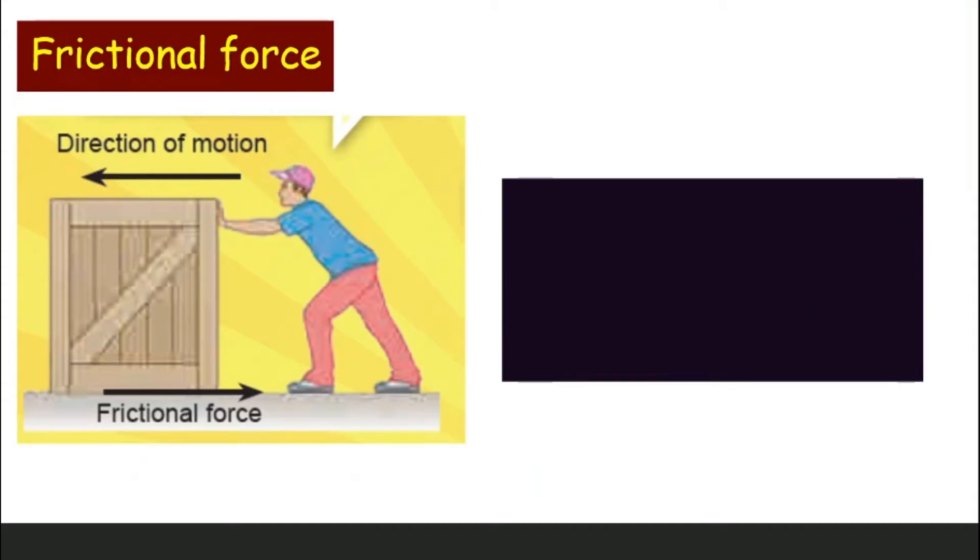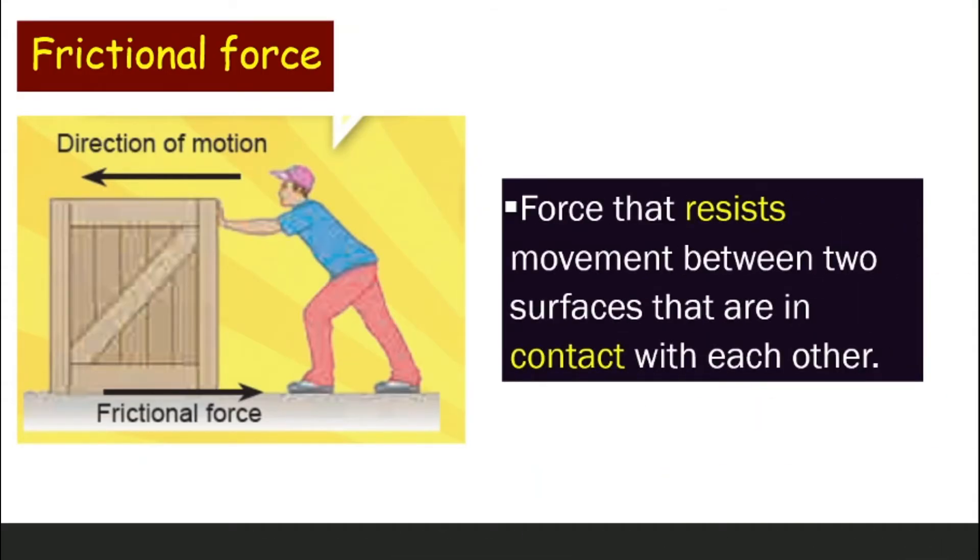How about frictional force? Frictional force is the force that always resists movement between two surfaces. For example, this man here is trying to move this box towards the left. And this box is in contact with the surface area of the floor. So there are two surfaces that are moving against each other. And frictional force will always oppose the direction of motion. So the frictional force is towards the right when the man tries to push the box towards the left.